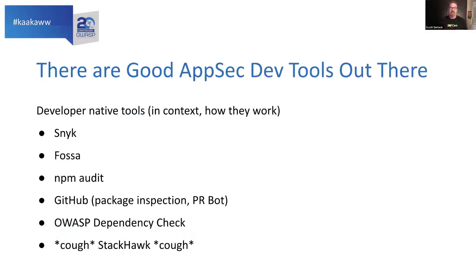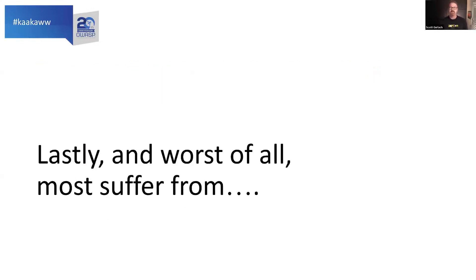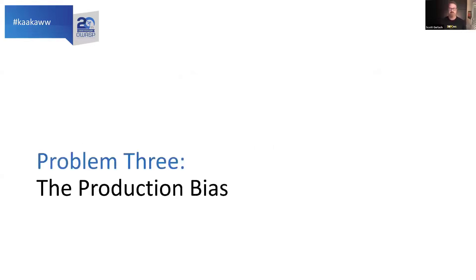There are good AppSec tools that work in a developer-native flow — in the context of how they work, where they work, when they work. A few good ones include OWASP Dependency Check, Dependabot, Snyk, FOSSA, and npm audit. These work really well. But lastly and worst of all, most of these tools suffer from problem number three.